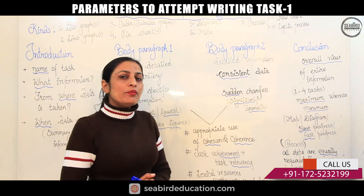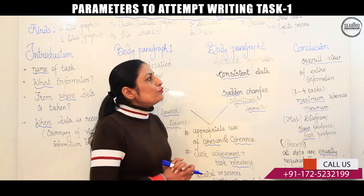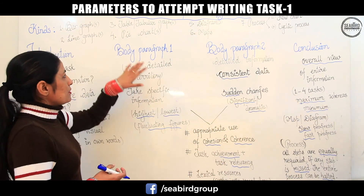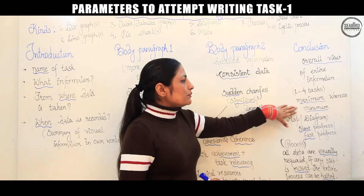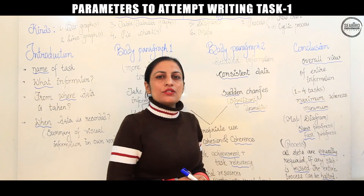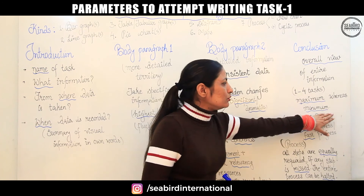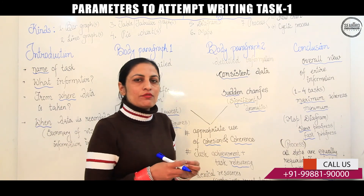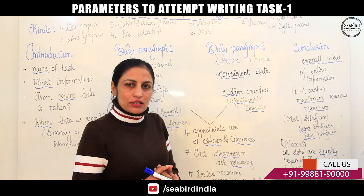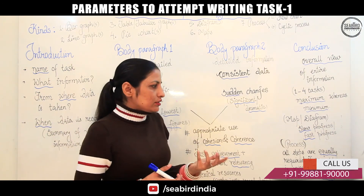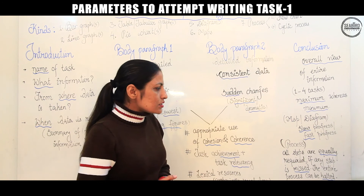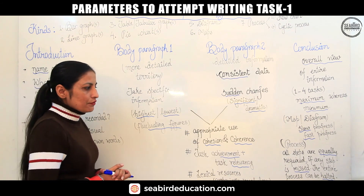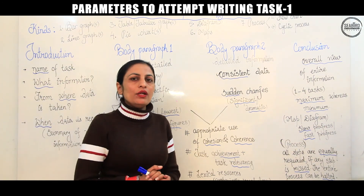Lastly, the conclusion — that is also a very important part of your task. It should be an overview, an overall view of your entire information. If you are writing tasks one through four, you can explain by what figures you analyzed at maximum compared to minimum. If you have explained a map or diagram, you can go for whether the progress was slow or fast, where development was more or where it was very low. In terms of process, you can explain all the steps — all the stages are very important. If any step is missed, the entire information can be halted.